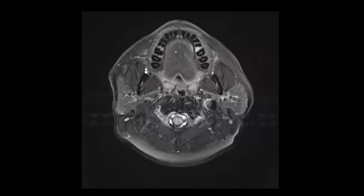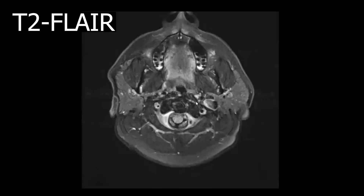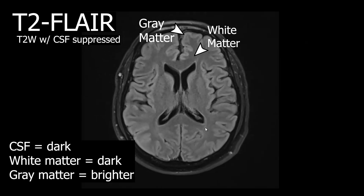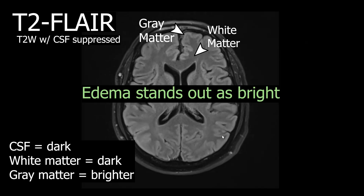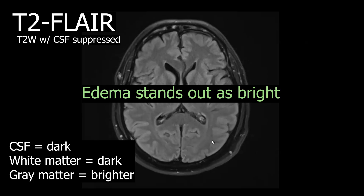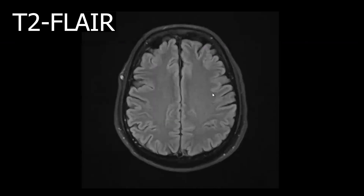The next sequence is axial T2 FLAIR. As the name implies, this is a T2-weighted image with an inversion recovery pulse applied to null the CSF signal — therefore CSF is hyposignal. The main advantage is that edema in the brain parenchyma is more conspicuous, as the bright signal from CSF has been nulled. Many abnormalities in the brain demonstrate hypersignal on T2 or T2 FLAIR. On FLAIR, we can also look for abnormalities within the sulci — for example, hypersignal in the sulci can suggest subarachnoid hemorrhage.